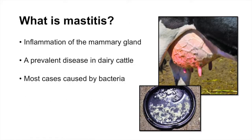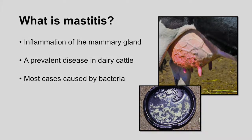Mastitis is a word that simply means inflammation of the mammary gland. Anytime we see inflammation of an animal's mammary gland — not just a dairy cow, but any mammal — we call this mastitis. Now in the dairy industry, mastitis has been and still remains a prevalent disease, and most oftentimes when an animal is diagnosed with mastitis, a major cause of this diagnosis is going to be because of bacteria.